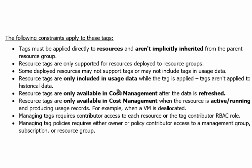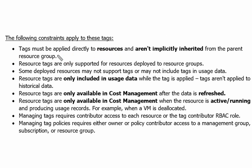Tags can be applied to any resource or resource group to segregate it or to filter it in a cost report. Tags must be applied directly to a resource — they aren't implicitly inherited from the parent resource group. So when we apply the tag on a resource group, it's not going to be inherited and applied on the resource. We always have to apply the tag on the resource itself rather than on the resource group.